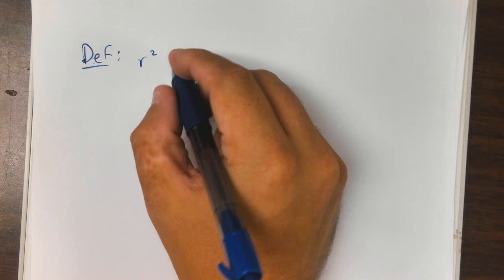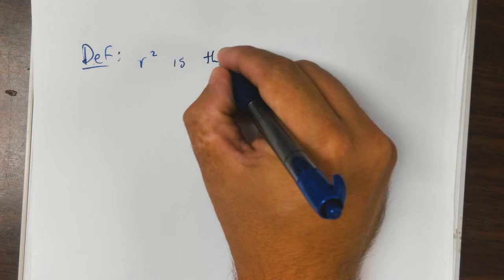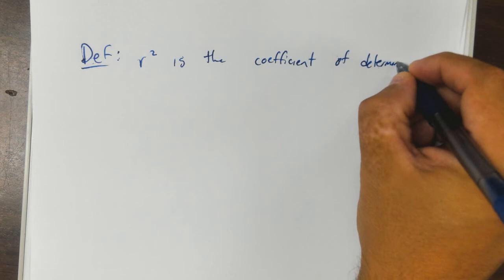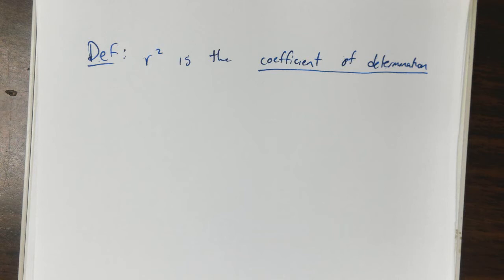All right, let's start with R squared and define it first. R squared is also called the coefficient of determination.